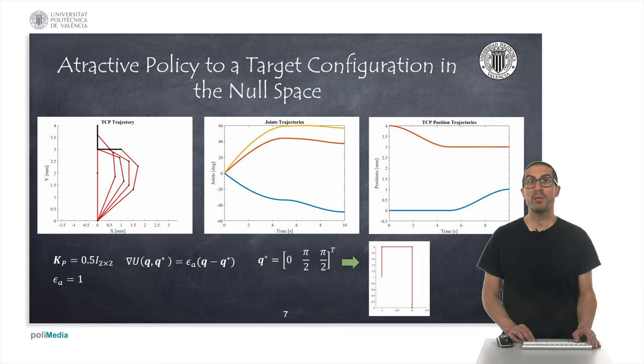So, following with the previous example, we have now implemented a controller that must follow the same path, but also tends to a given configuration q star, shown in the figure at the bottom. As we can see, the robot is now capable of following the reference trajectory even at the first part of the trajectory.